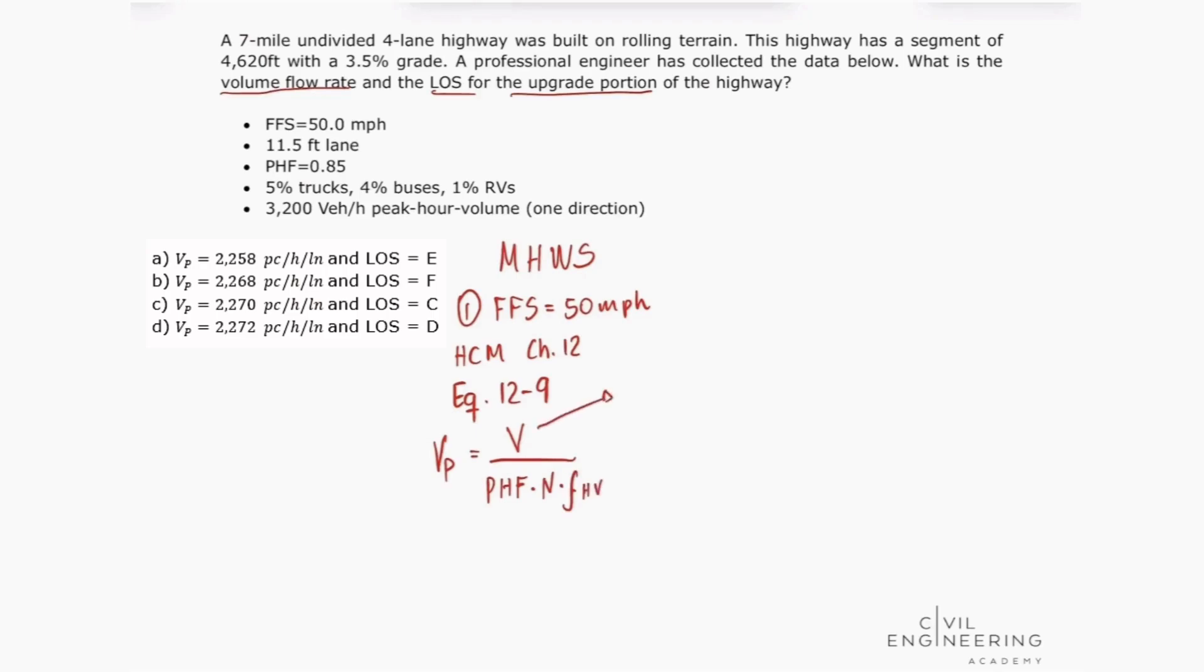So we know that our demand is here in the data, so this is 3,200. Our peak hour factor is equal to 0.85. Our number of lanes in one direction would be two, because this is a four-lane highway segment, so two lanes in each direction. And we don't have this value, which is our adjustment factor for heavy vehicles.